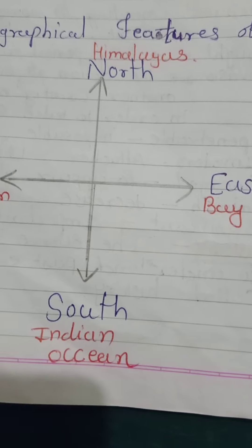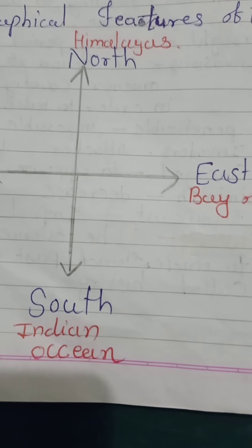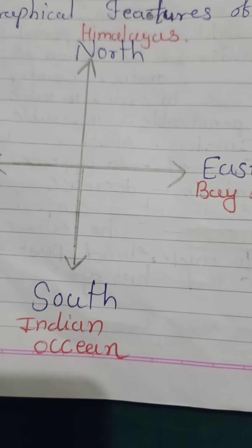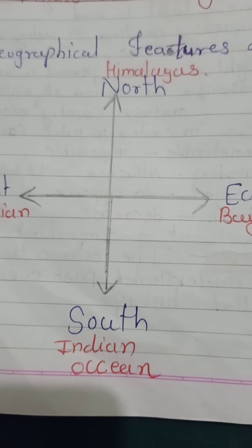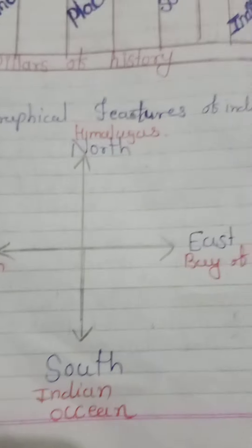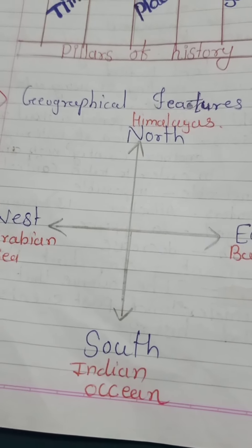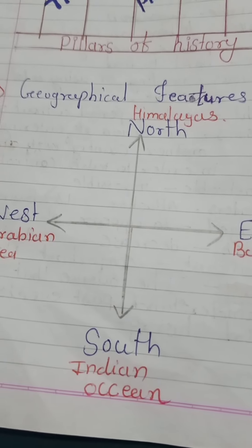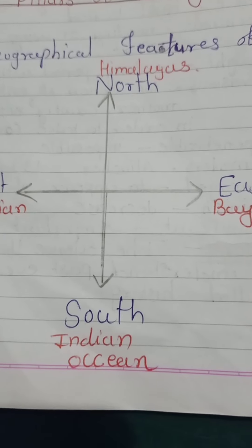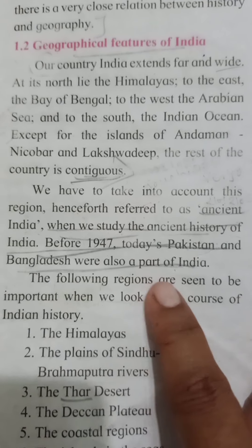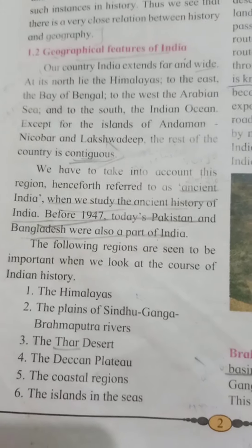Except for the islands of Andaman Nicobar and Lakshadweep, the rest of the country is contiguous. All three sides of India are surrounded by water. In ancient India, when we study ancient Indian history before 1947, today's Pakistan and Bangladesh were part of our India — before freedom, they were also part of India.